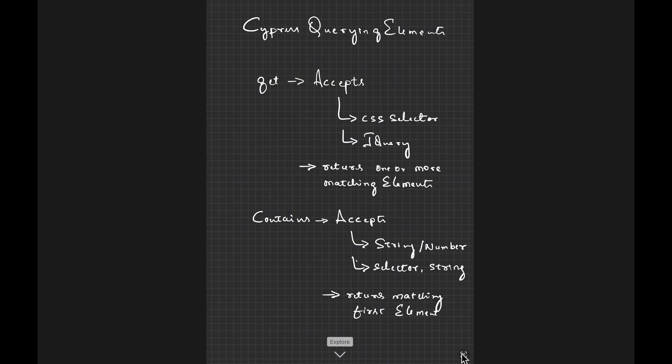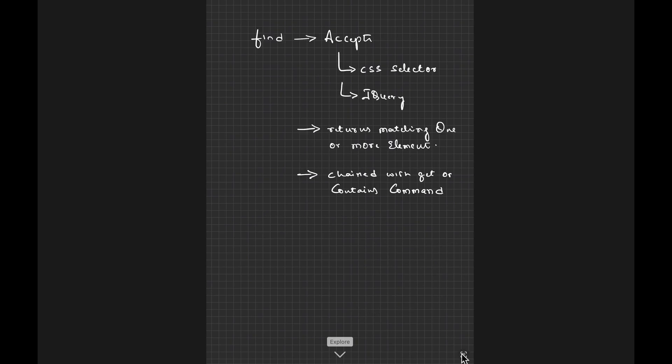Let's see what commands we have in Cypress to find elements. The first one is `get`, which accepts a CSS selector or jQuery and returns one or more matching elements. The next is `contains`, which accepts a string, number, or a selector-and-string combination and returns the first matching element. Next is `find`, which accepts a CSS selector or jQuery and returns one or more matching elements. `find` typically has to be chained with `get` or `contains` because it is used to find all descendants and their children references.